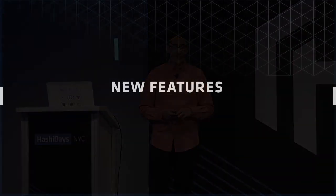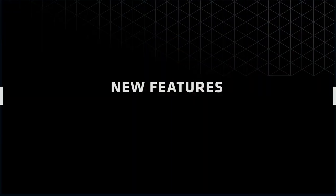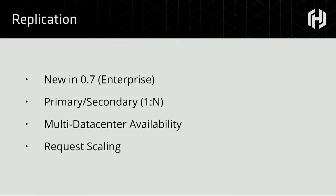Now I want to touch on some of the new features that have landed in Vault. Vault has an incredible feature velocity, so it's hard to keep track. One of the biggest ones we're pretty proud of is the replication work that landed in 0.7. As Mitchell said, it's a primary-secondary model — trying to avoid the 'what happens if you have multiple masters and conflicting writes' type of problem by taking a primary-secondary approach.